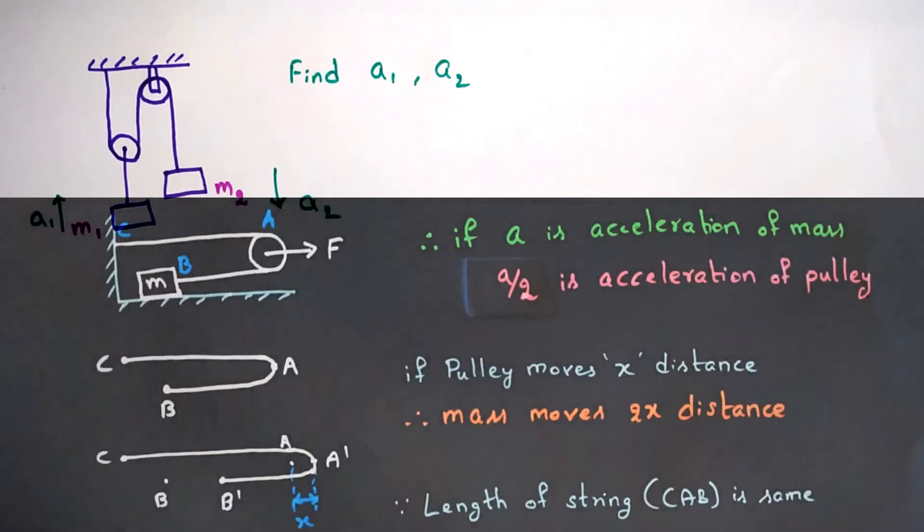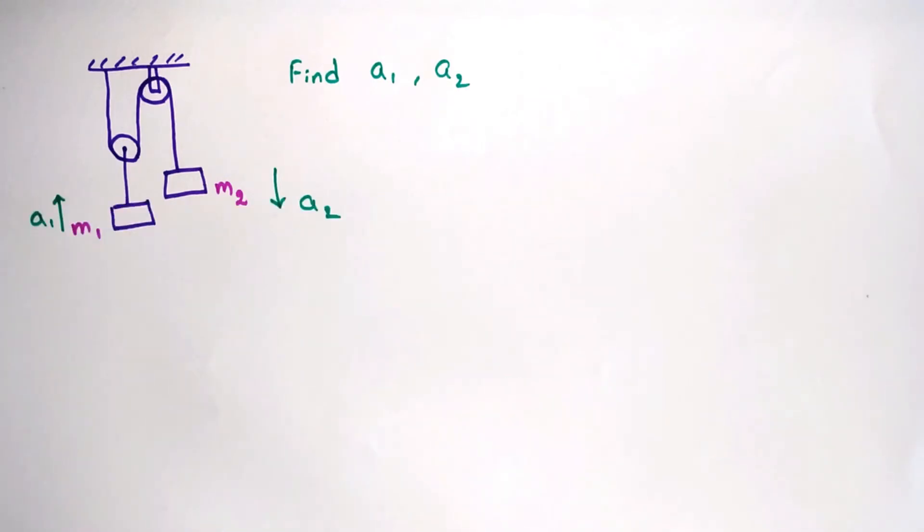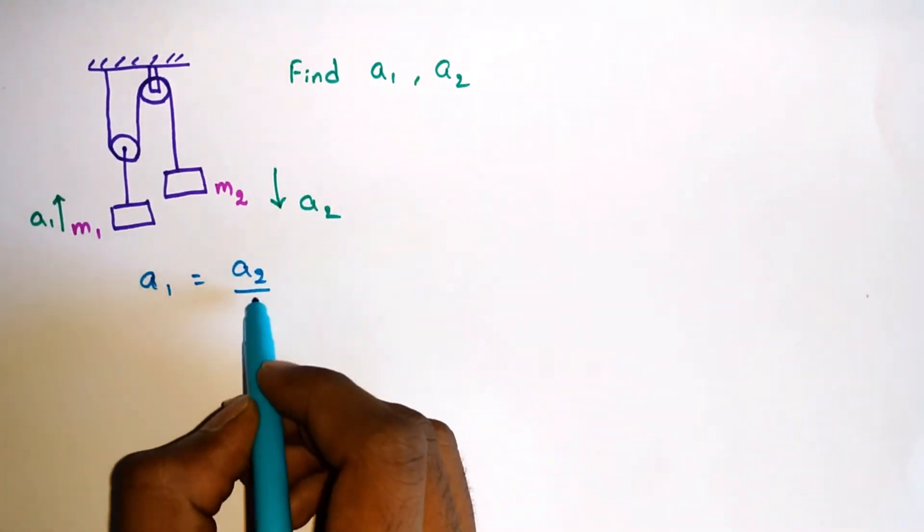In the previous example, we saw that the pulley acceleration is half of the acceleration of mass. So here also it is the same case. Here a1 = a2/2.